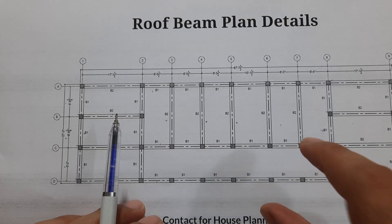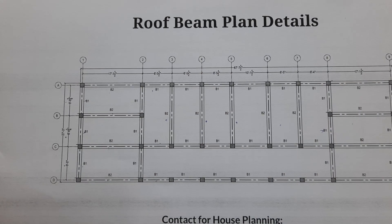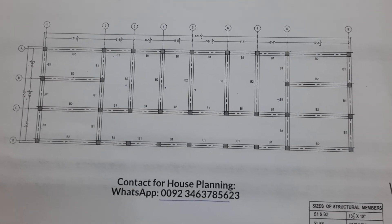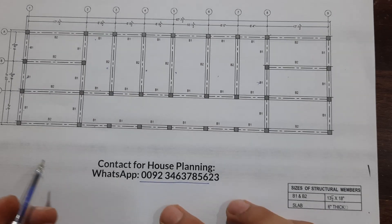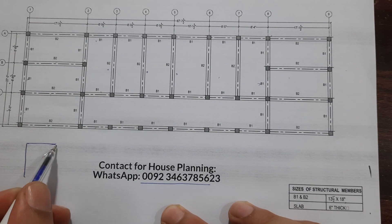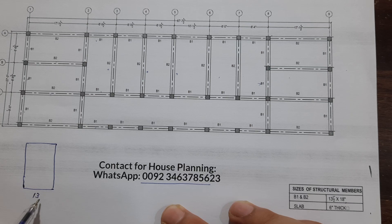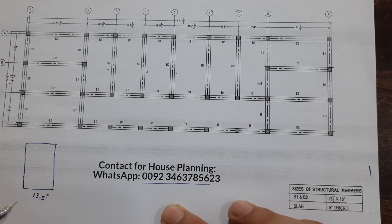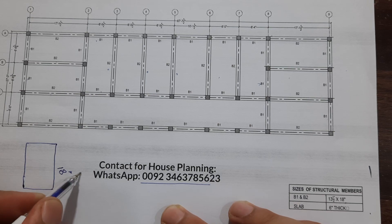B2 beams are long and B1 is the short beam. The size of both B1 and B2 is 13.5 inches by 18 inches. That means the width is 13.5 inches with concrete cover and the depth of the beam is 18 inches.